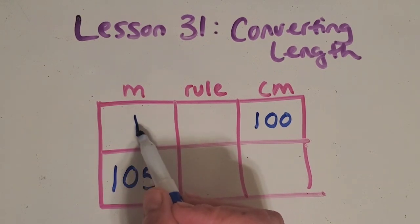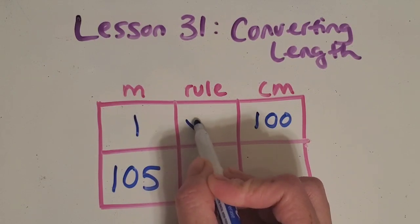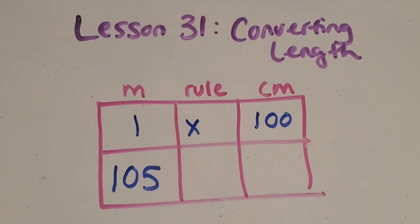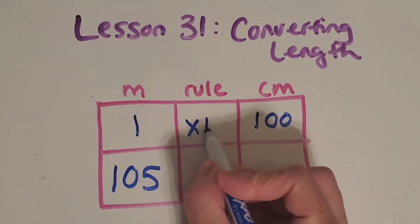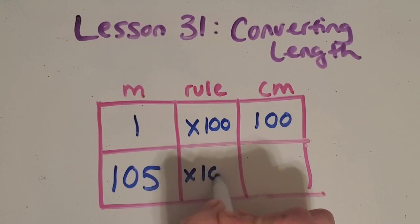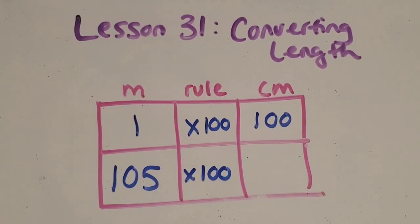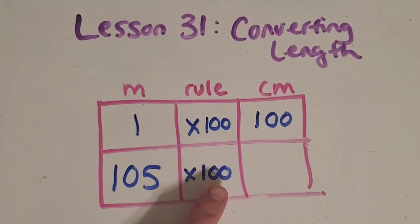So in this case we're trying to find 105 meters and we just need to know the rule to figure this out. So how do you think you get from 1 to 100 with multiplying? These are always going to be multiplying or dividing problems. But since we're getting bigger we know it's multiplying. Okay great. Times 100. So then we just need to do that to 105.